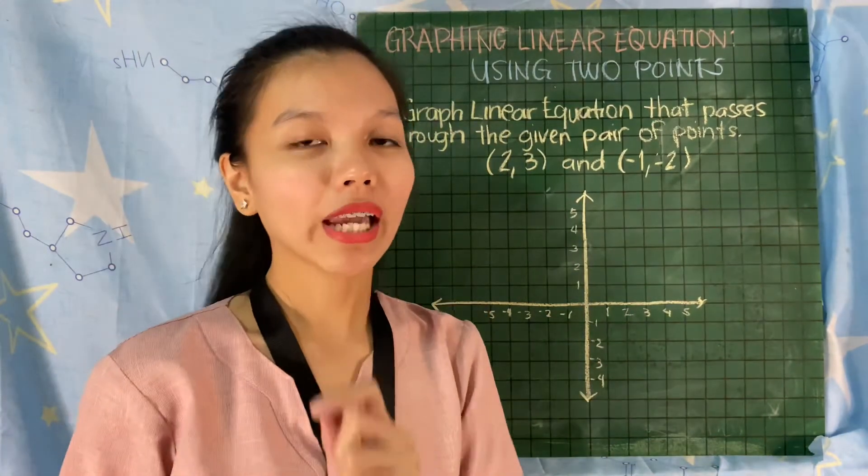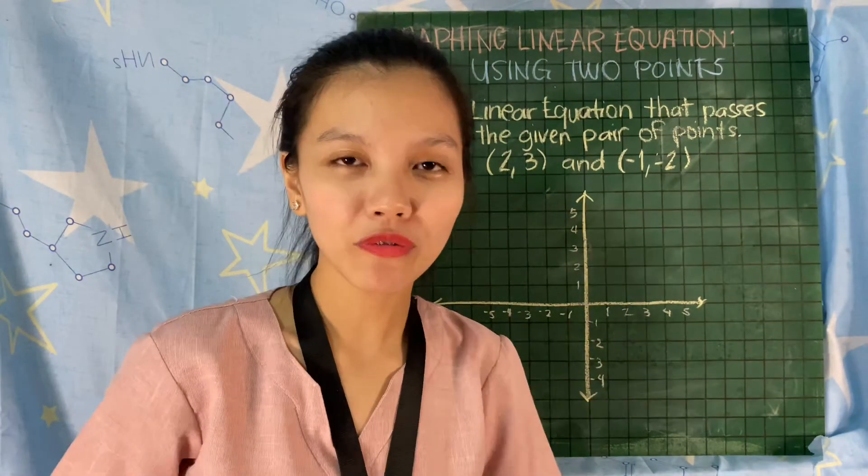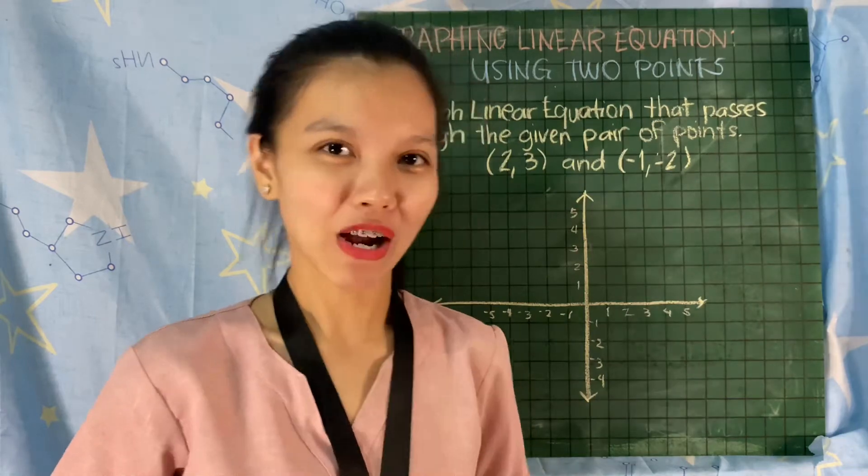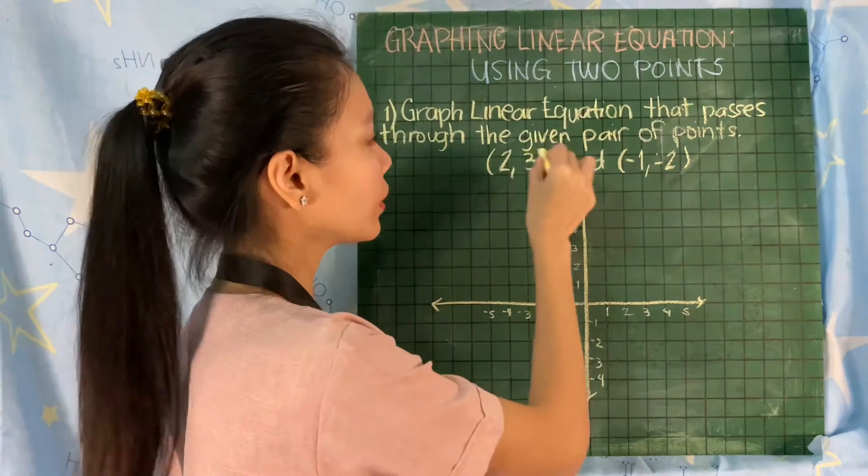First, locate the point (2, 3). Both of the numbers are positive. Where can you find it? Yes, very good. We can find it in quadrant 1.